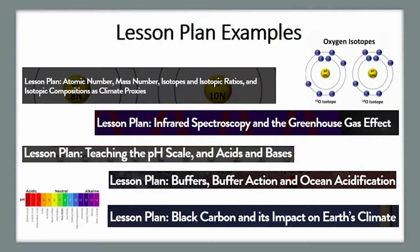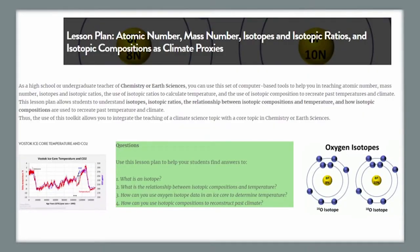Let us begin with our first lesson plan, titled Atomic Number, Mass Number, Isotopes and Isotopic Compositions as Climate Proxies. As an undergraduate teacher of chemistry or even earth sciences, you can use this set of computer tools to help you in teaching atomic number, mass number, isotopes, and an application of using isotopic data related to climate change. This lesson plan will allow your students to understand atomic number, mass number, isotopes, how to calculate isotopic ratios, and what might be an application of isotopic compositions in climate studies.